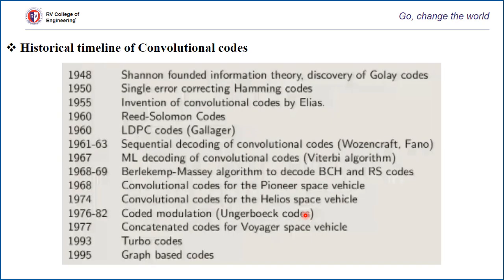Around 1948, Shannon founded information theory. Subsequently, around 1955, Elias introduced convolution codes — Elias is considered the founder of convolution codes. And around the 1960s, Reed-Solomon codes and LDPC codes were discovered.